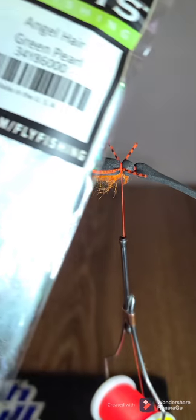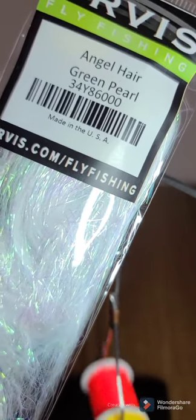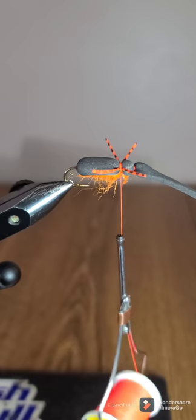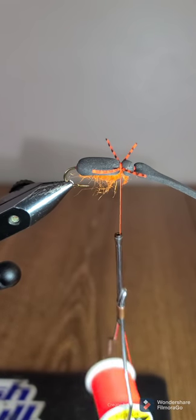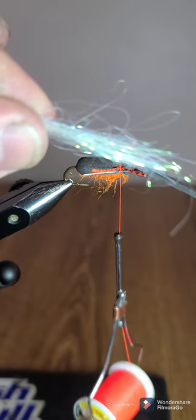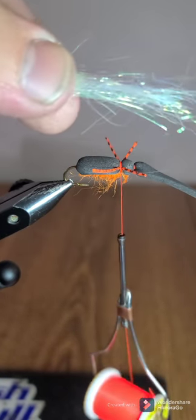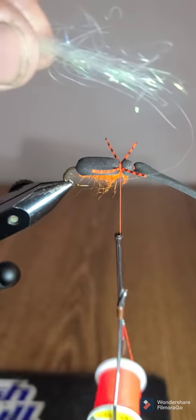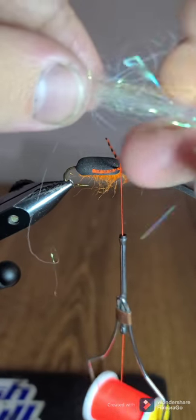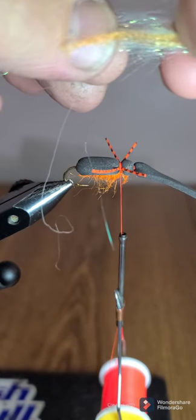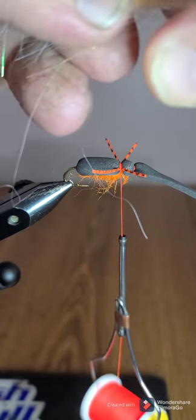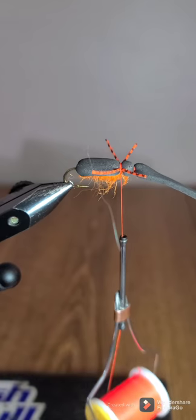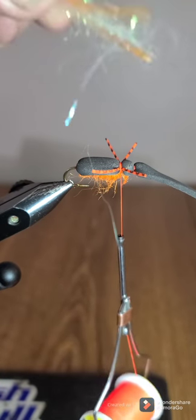And I also take Angel hair in the green pearl. And I get a clump about like that. It's not a whole lot, it looks like a lot but it's not. And I take the Antron yarn, put one in the back and one in the front. So it's like that.